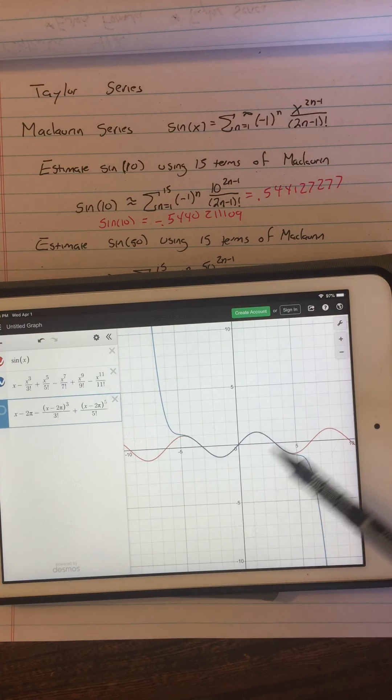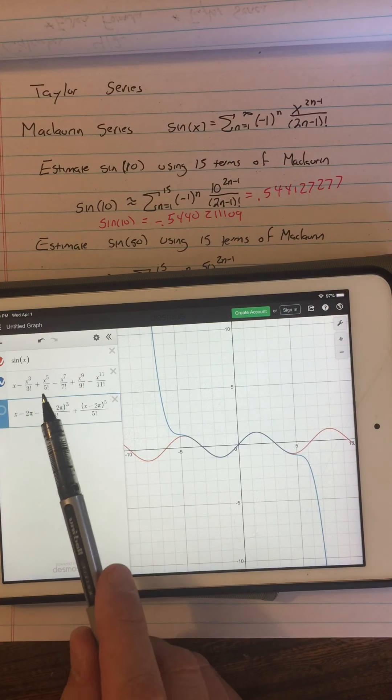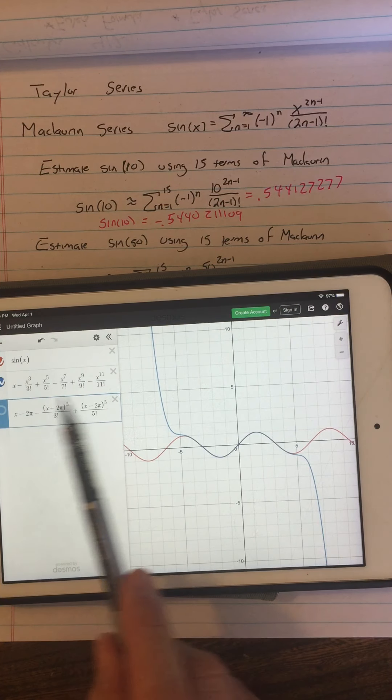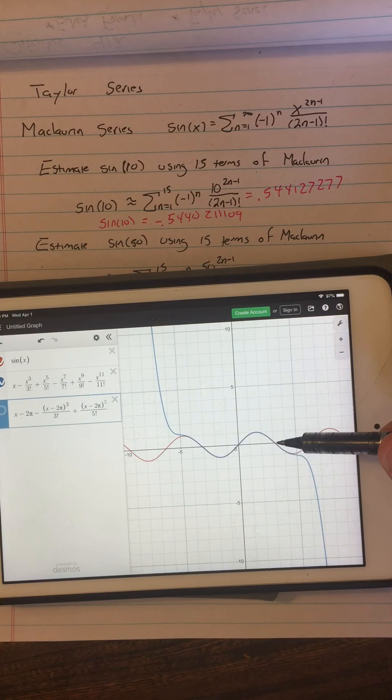So when we graph it, what we see is this line. Now, I have limited patience if I have to write these out by hand, so I did 1, 2, 3, 4, 5, 6 terms. So that's n equals 6. So you can see that if I used n equals 6, I would be able to estimate the sine of 3 pretty well. But my sine of 5 would be not very good, and sine of 10 would be off the charts bad. And if I tried to use that for sine of 50, it would be ridiculous.